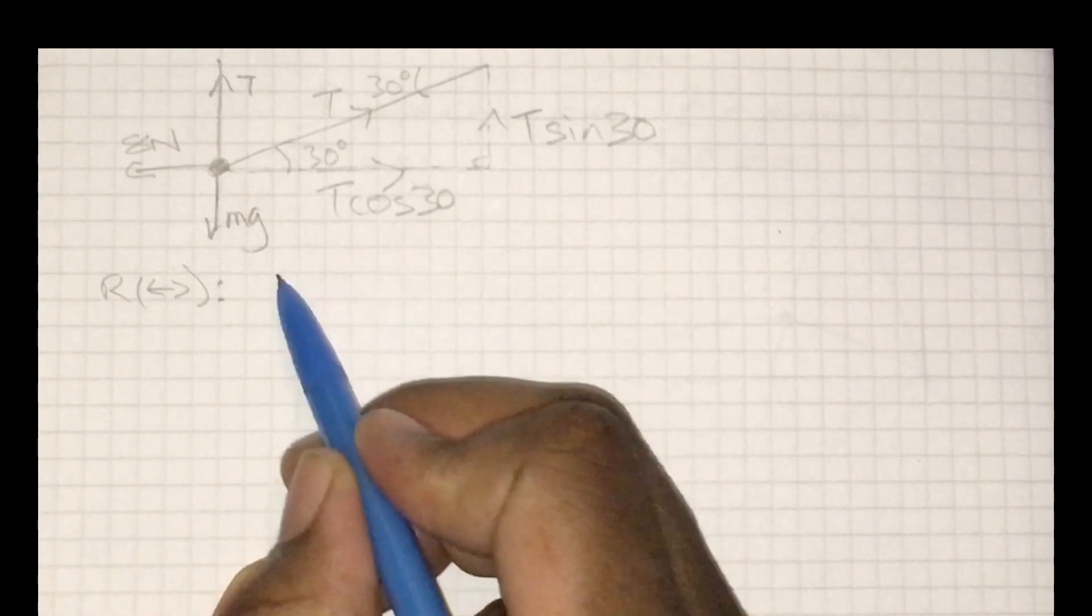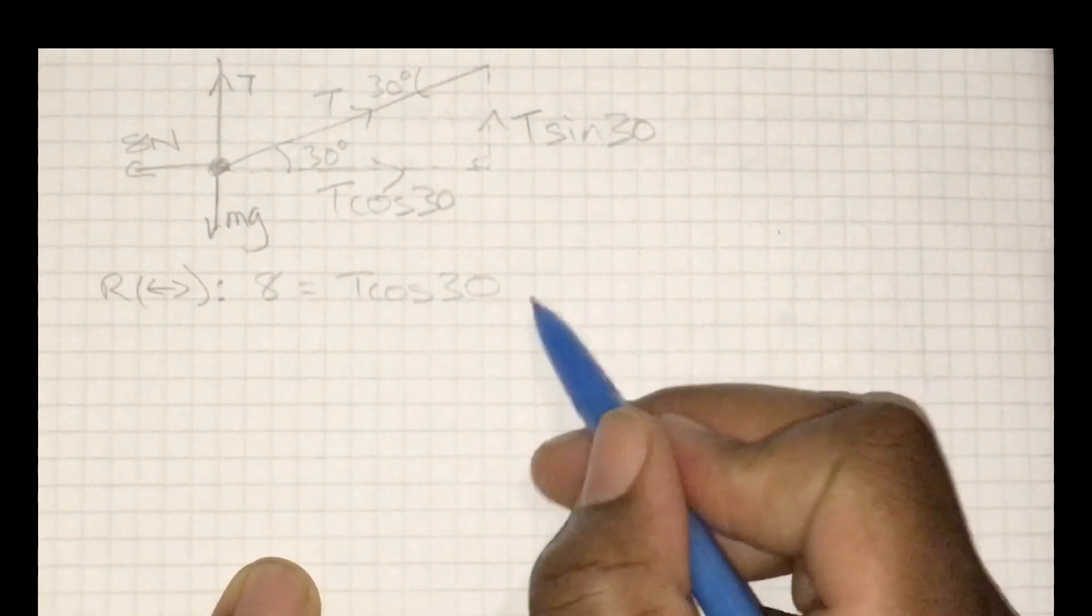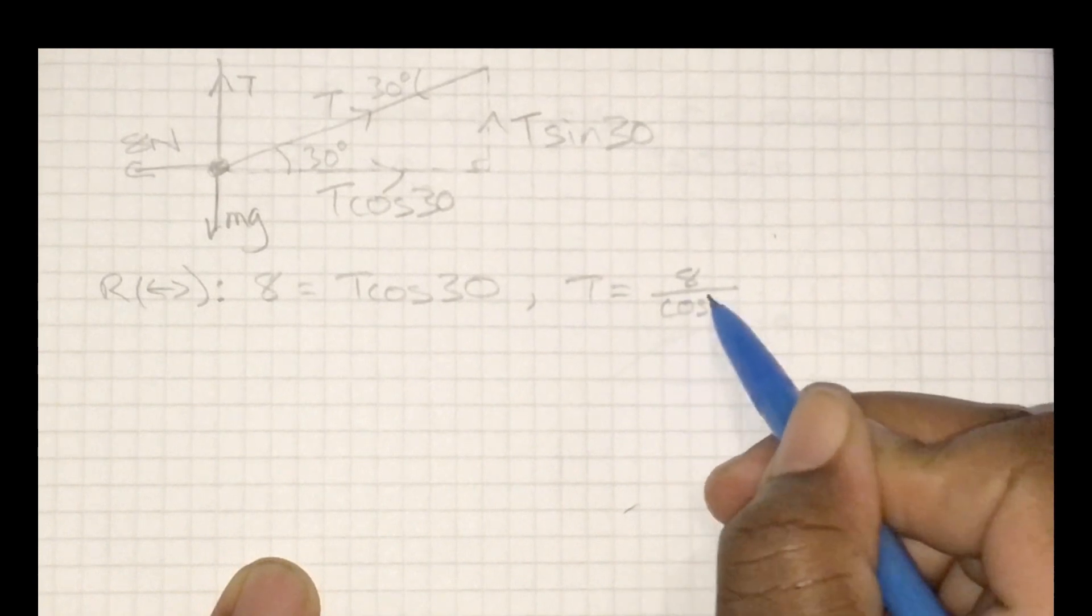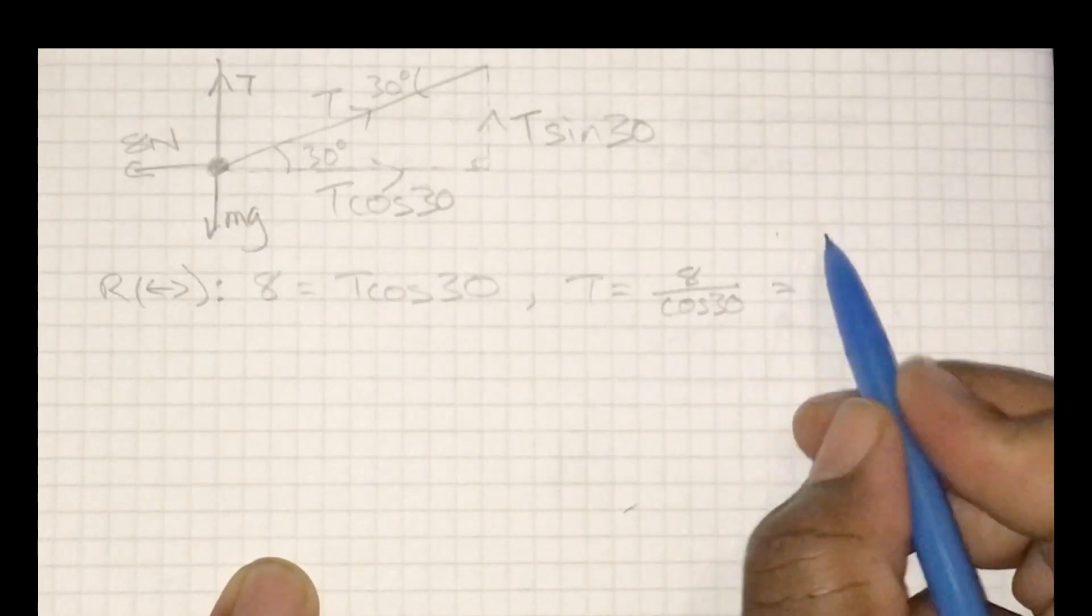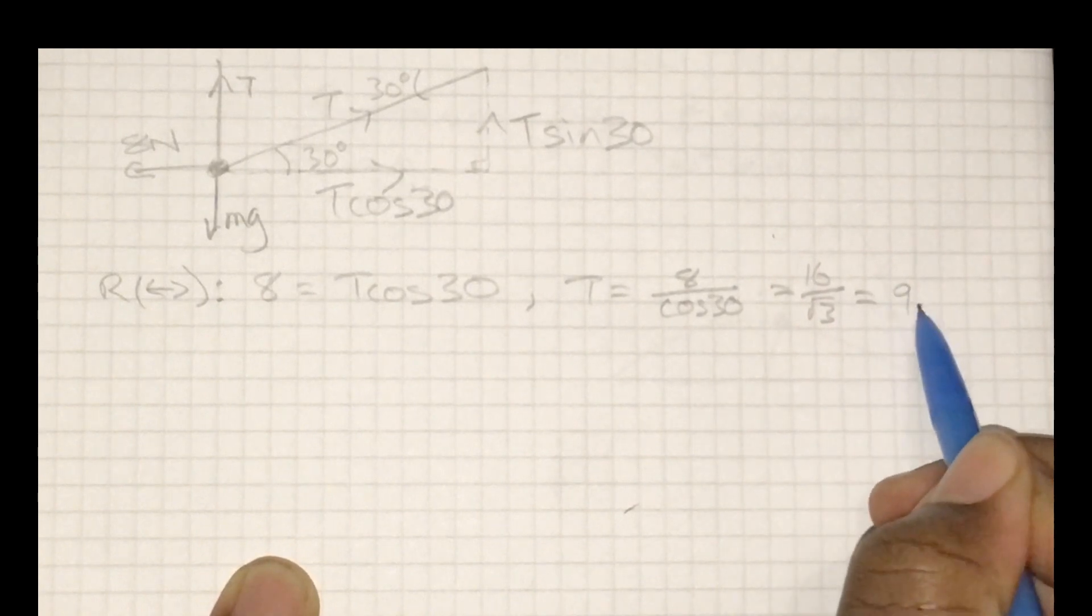Starting horizontally, this object's in equilibrium, so 8 equals t cosine 30, and I can quite quickly get an expression for t. So t should be 16 over root 3, or as a decimal, 9.24 newtons.